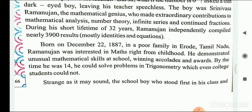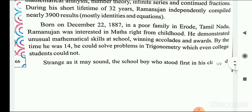Born on 22nd December 1887 in a poor family in Erode, Tamil Nadu, Ramanujan was interested in maths right from his childhood. He demonstrated unusual mathematical skills at school, winning accolades and awards. By the time he was 14, he could solve problems in trigonometry which even college students could not. He got many awards and accolades — that means prizes for achievement.